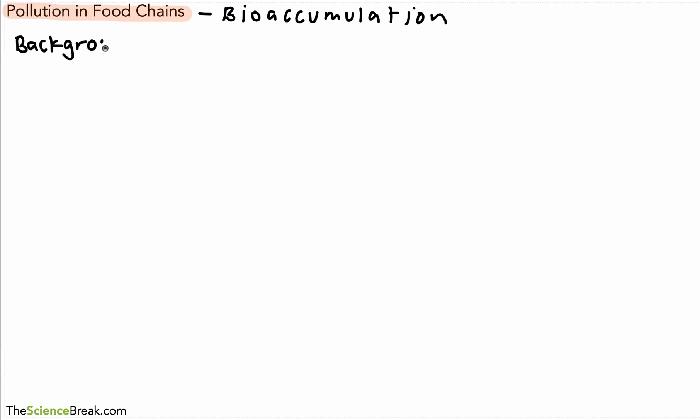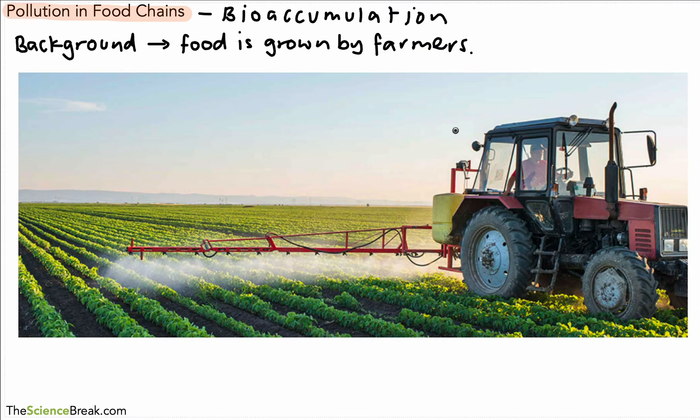A very quick look at some background information and this is to do with food production. So food is grown by farmers and here we're mainly talking about food crops like for example in this picture shown here.